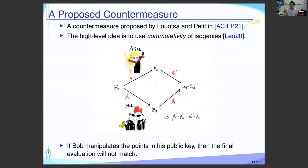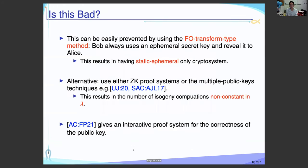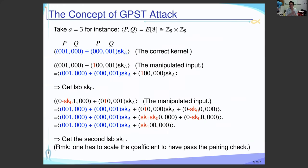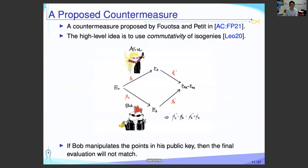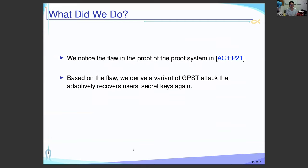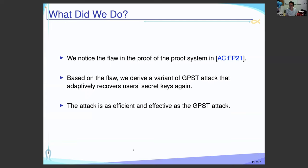In AsiaCrypto 2021, Fussal and Petit gave an interesting interactive proof system for the correctness of the public key. The high-level idea is very simple: they use the commutativity of isogeny. We know that the two final curves will be isomorphic, but if both parties use the value formula, the two curves will be the same and the evaluations will also be the same. So if Bob manipulates a point in the public key, the final evaluation will not match. We noticed a flaw in the proof of their proof system, and based on this flaw, we derived a concrete attack — a variant of the GPST attack that adaptively recovers the user's secret key, as efficient and effective as the GPST attack.